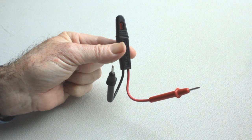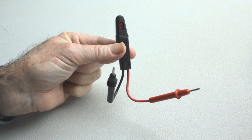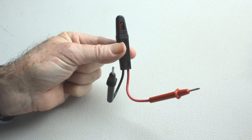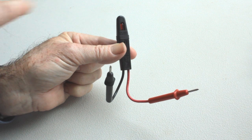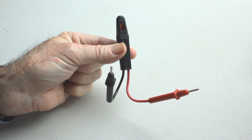This little device is called a neon tester. It has a small light bulb and two prongs.